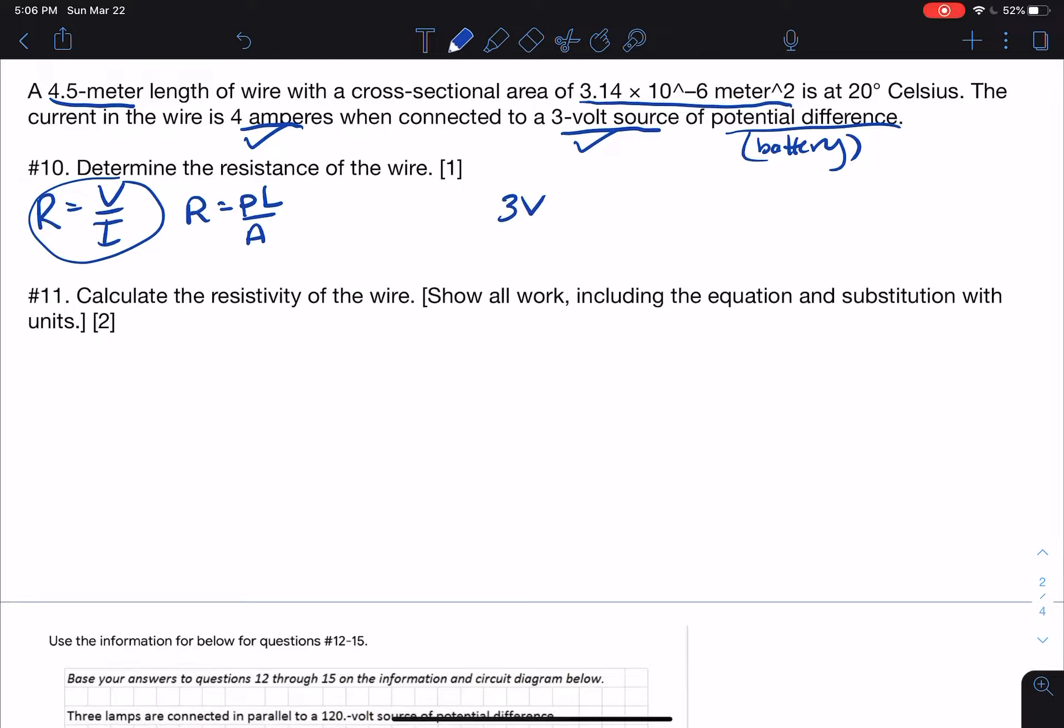So 3 volts divided by 4 amps is going to just be 0.75 ohms. And that's the resistivity of the wire. Now number, sorry, the resistance of the wire.